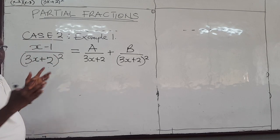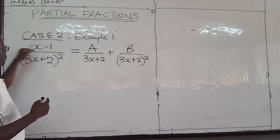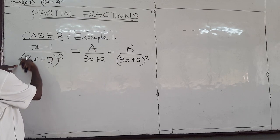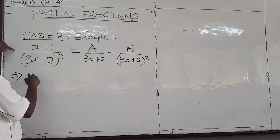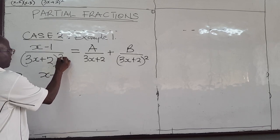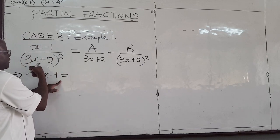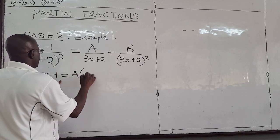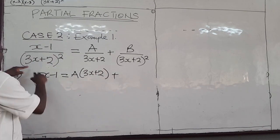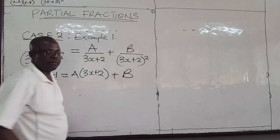And so once again we want to solve for A and B. So the idea is, in this case, just multiply both sides by 3x plus 2 squared, and this will cancel out. So if you multiply by 3x plus 2 squared, I'm going to have x minus 1 here, and that is equal to, 3x plus 2 will cancel one of this, so I have A into 3x plus 2, and then 3x plus 2 squared multiplies this, it will cancel all of this out, and I'm just left with B.